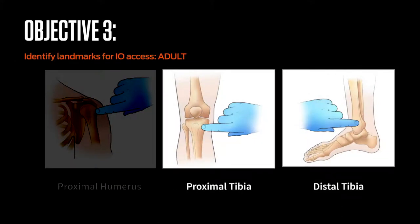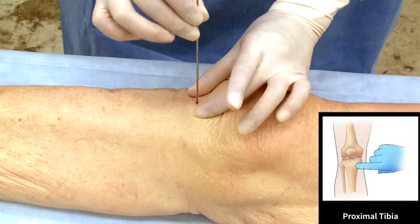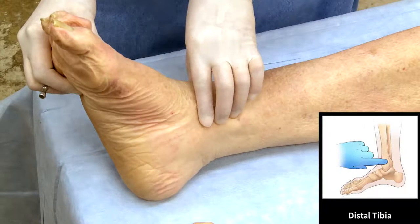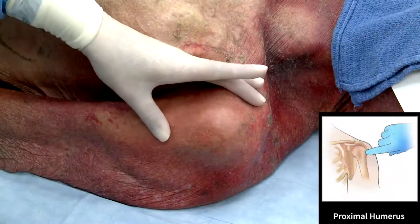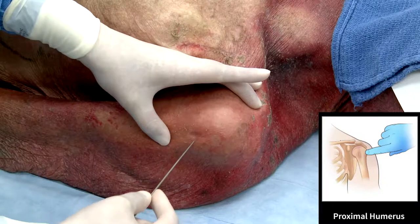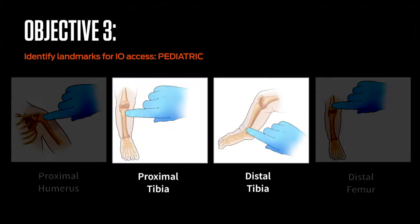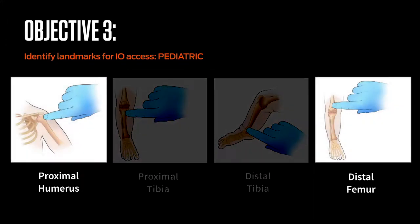This slide illustrates the adult proximal and distal tibial access sites. Each site of the adult tibia is located medially and approximately 2 to 3 cm from the adjacent joint. The pediatric proximal and distal tibial sites are located medially and approximately 1 cm from the adjacent joint. The pediatric distal femur site is located medially, midline, one centimeter proximal to the patella. The pediatric proximal humeral site is located laterally and approximately one centimeter from the adjacent joint.